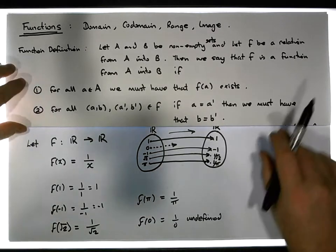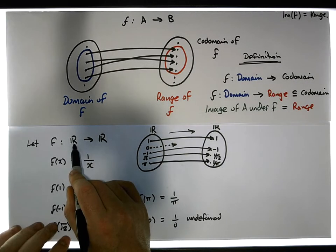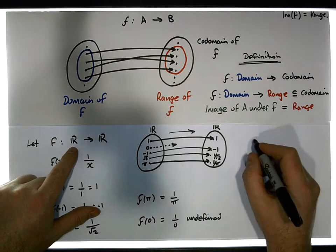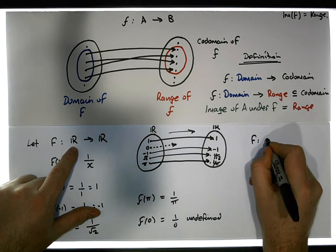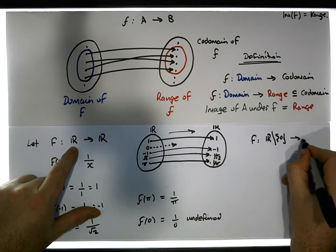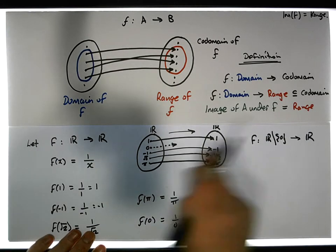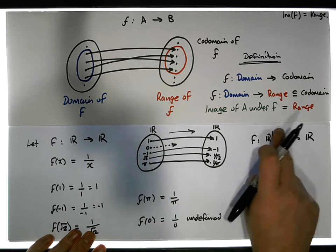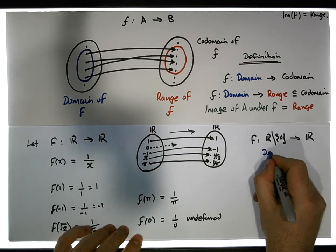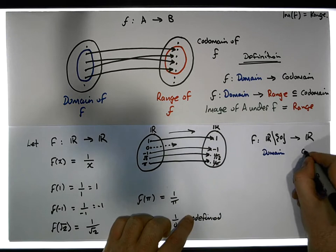So actually this function is not well defined. We have a particular problem, because not every value in ℝ is mapped across. We know from our definition of a function that for all values in the domain, every value f of x must exist — and f of zero doesn't exist, it's undefined. So how can I fix this? I could redefine the function to take the real numbers excluding zero. So I could redefine this function to be: f takes the real numbers excluding zero into the real numbers.